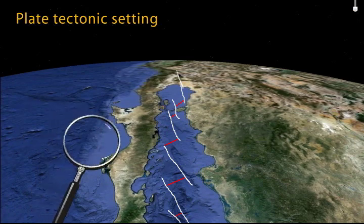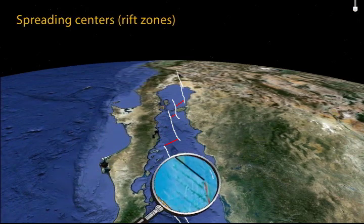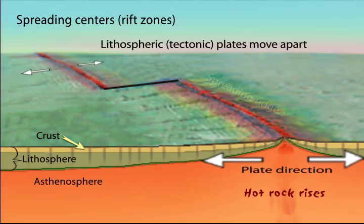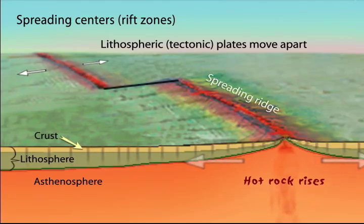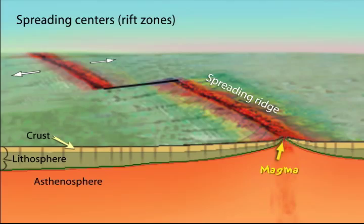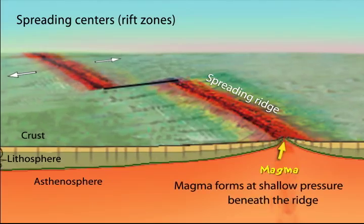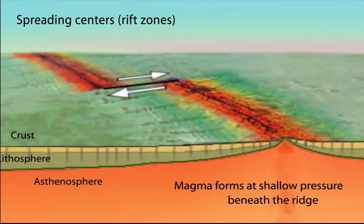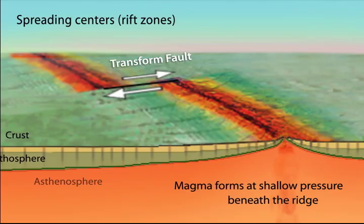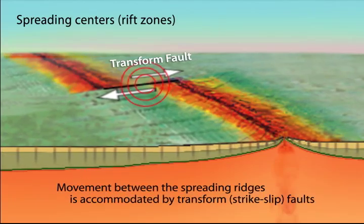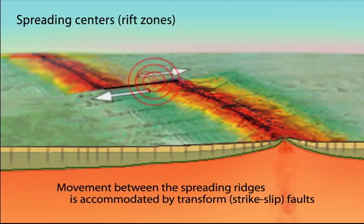If we zoom in we can see the processes occurring. As the lithospheric plates move apart, heat rises beneath the mid-ocean ridge. Magma forms at shallow pressures and creates new rock at the spreading ridges. The plates move away in conveyor belt-like fashion. Movement between the ridges is accommodated by transform faults, where large earthquakes occur due to friction between the plates. Smaller earthquakes also occur along the ridges.